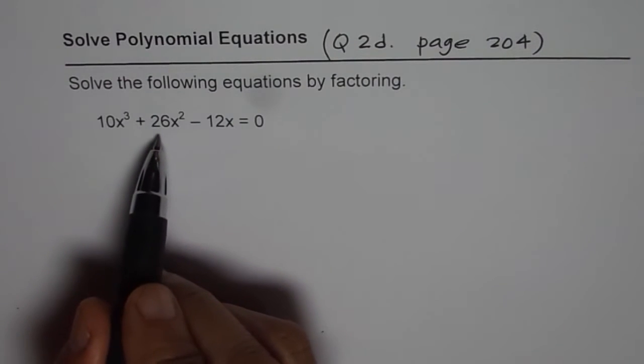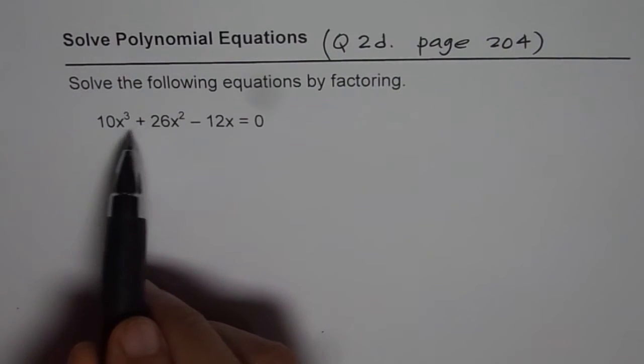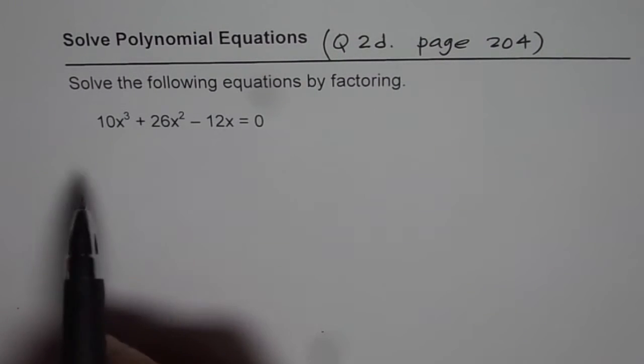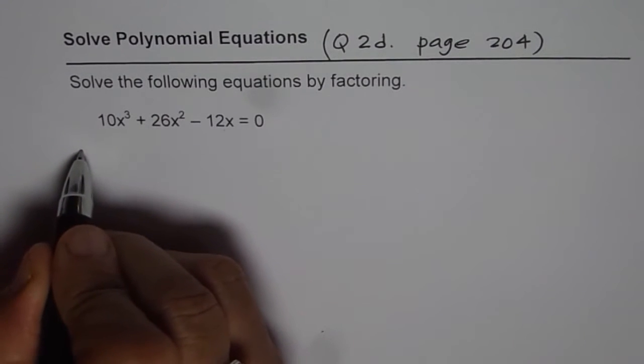10x cubed plus 26x squared minus 12x equals to 0. As you can see, amongst the numbers, 2 is common and amongst the variables, x is common. So, let us factor 2x. So, that is group factoring.